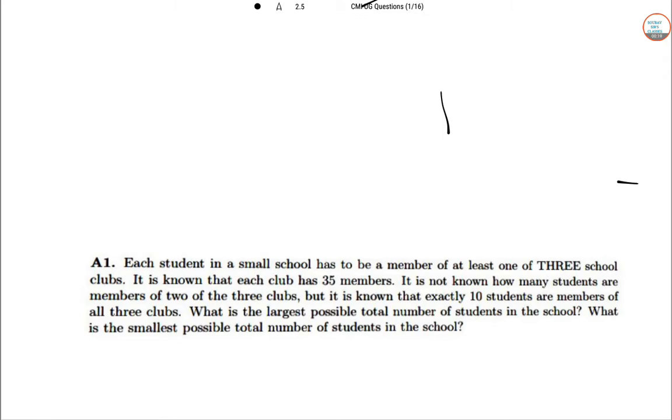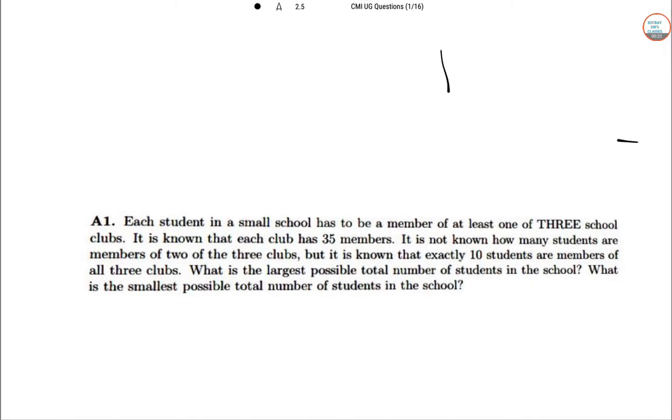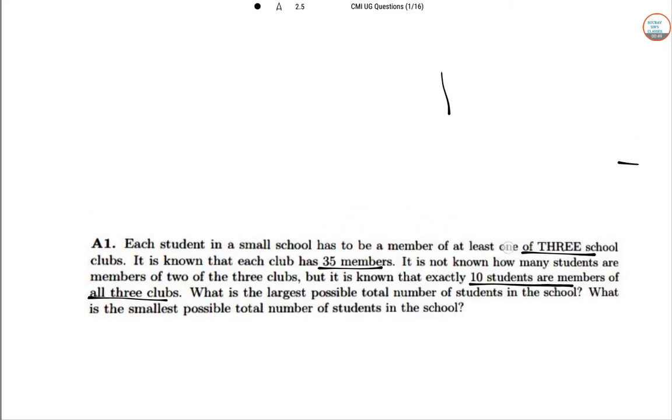So this is part one. Each student in a school has to be a member of at least one of the three school clubs. It is known that each club has 35 members and it is not known how many students are members of two of the three clubs. But it is known that exactly 10 students are members of all three clubs. So quite advanced level set theory has been given. What is the largest possible number of students in the school and what is the smallest number of students in this school as well.